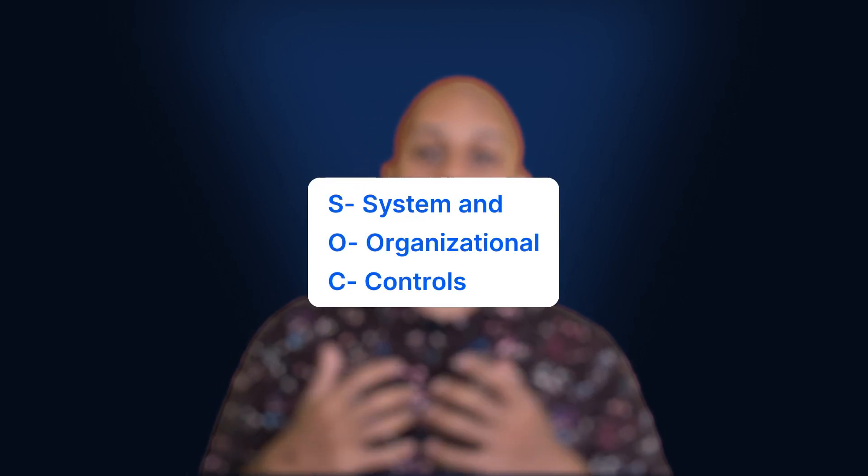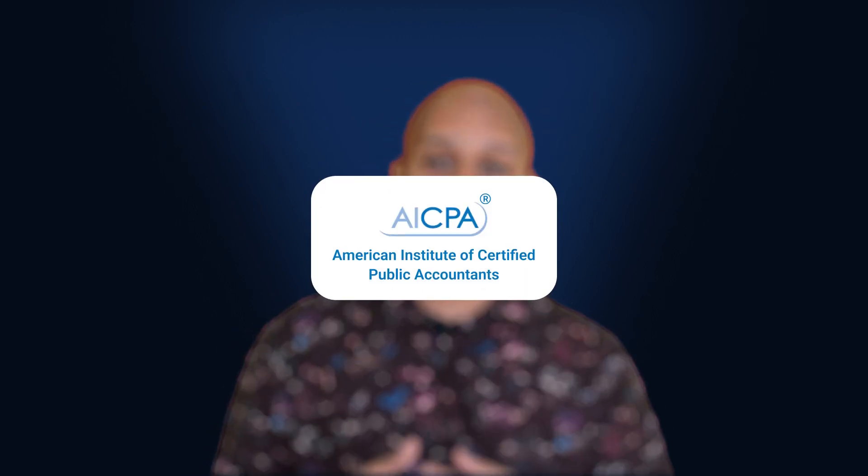SOC 2 is the gold standard for information security compliance, but did you know there are actually two kinds of SOC reports? Even if you did, do you know what they do, how they're different, and which one you need? Over the course of this video we're going to discuss SOC 2 Type 1 and SOC 2 Type 2. SOC 2 stands for System and Organization Controls, and it's a voluntary compliance framework set up by the AICPA, also known as the American Institute of CPAs.